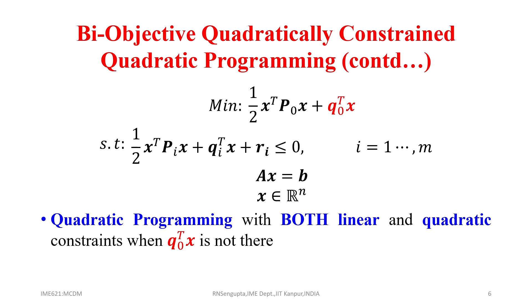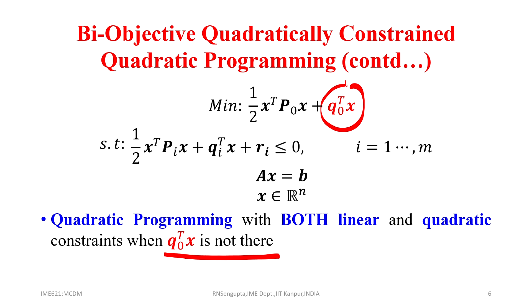The next case is quadratic programming with both linear and quadratic constraints, where the linear component Q-transpose X is absent from the objective. In the finance context, this corresponds to minimizing risk — since variance is a quadratic term — while the constraints involve both quadratic risk and linear return bounds, such as requiring returns to be at least some stipulated value and risk to be at most some stipulated value.